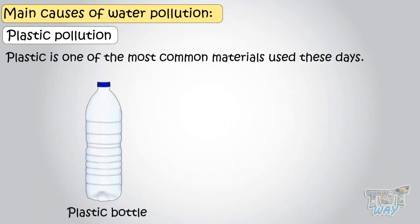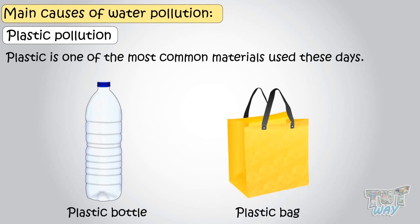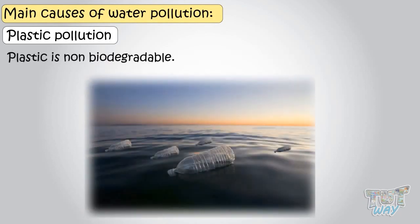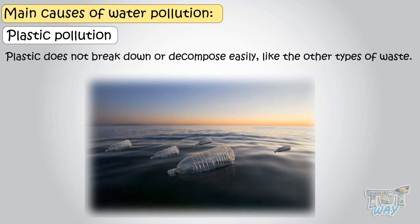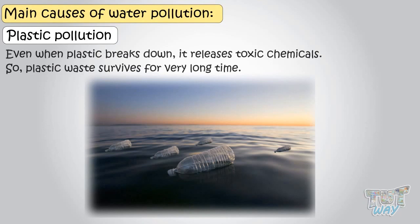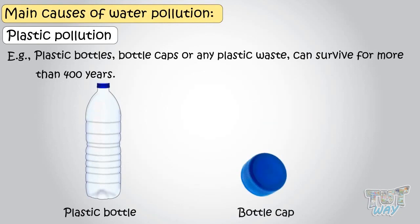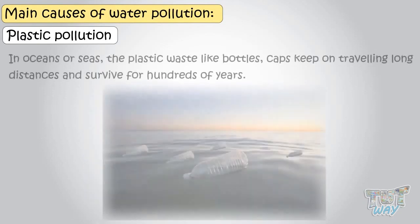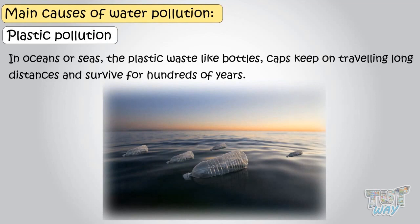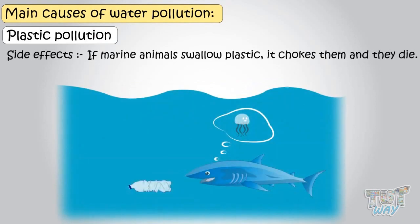Plastic is one of the most common materials used these days — almost everywhere we see plastic things. The worst fact is that plastic is non-biodegradable, meaning plastic does not break down or decompose easily like other types of waste. And even when plastic does break down, it releases toxic chemicals, so plastic waste survives for a very long time. In oceans or seas, plastic waste like bottles and caps keeps traveling long distances and survives for hundreds of years. If marine animals swallow plastic, it chokes them and they die.